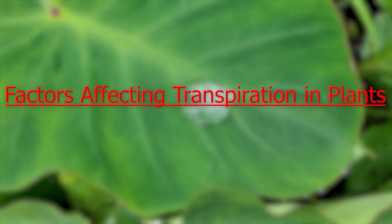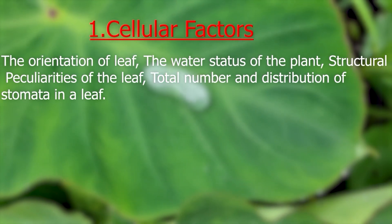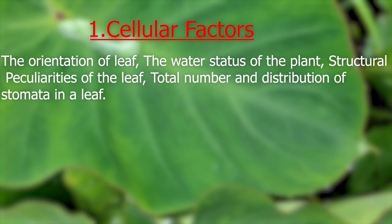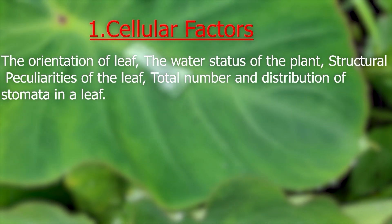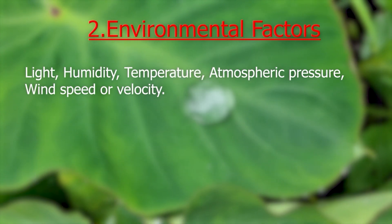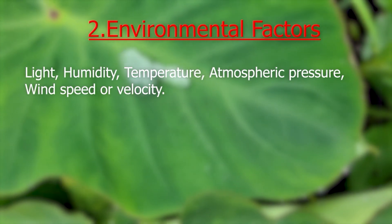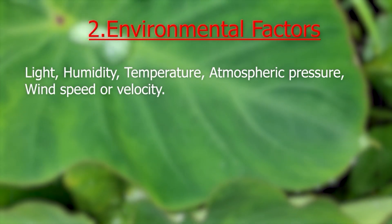There needs to be a delicate balance between the three processes for a plant to grow and be healthy. The factors affecting transpiration in plants include cellular factors such as the orientation of leaf, water status of the plant, structural peculiarities of the leaf, and the total number and distribution of stomata in a leaf. Environmental factors affecting the rate of transpiration are light, humidity, temperature, atmospheric pressure and wind speed.